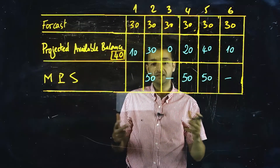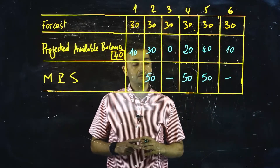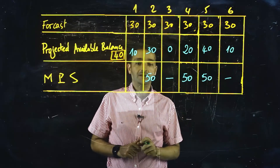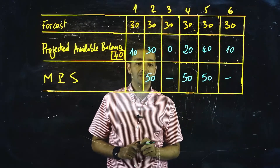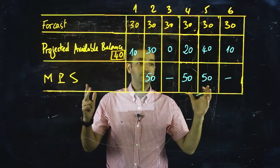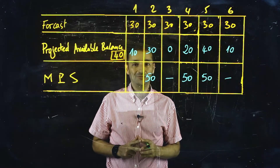In this example, we saw how to determine an MPS balance for a six-period schedule.